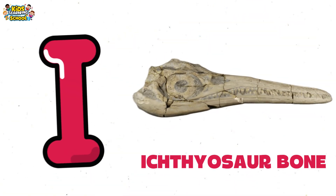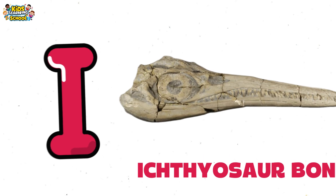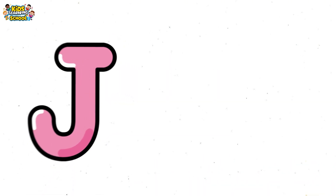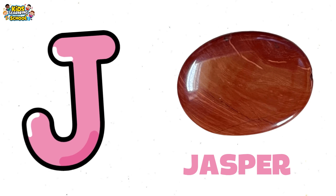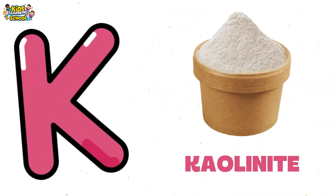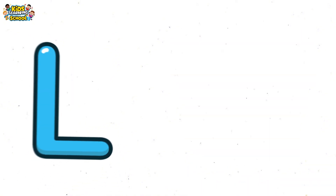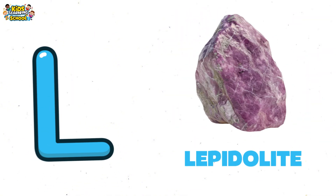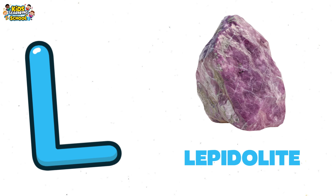I is for ichthyosaur bone, deep sea trace. J is for jasper with a painted face. K is for kaolinite, soft like clay. L is for lepidolite, lilac gray.